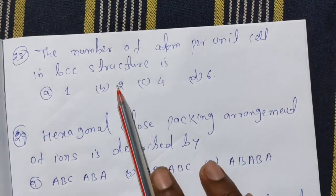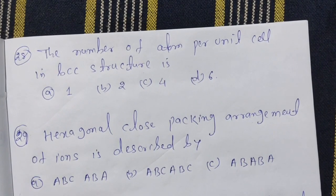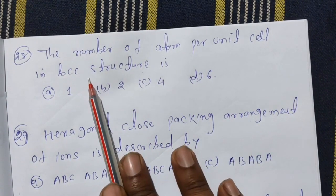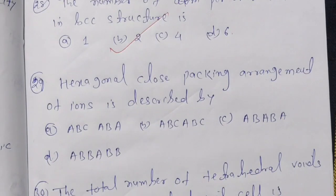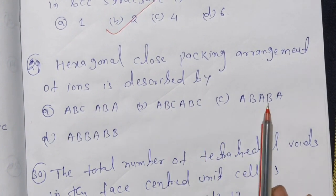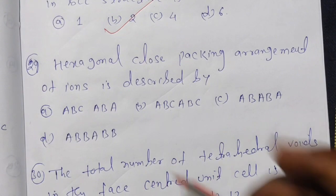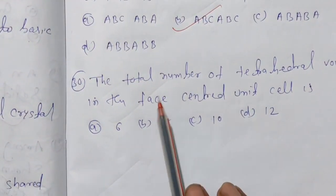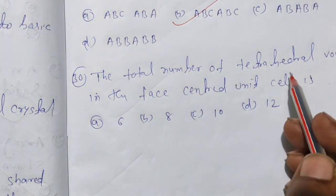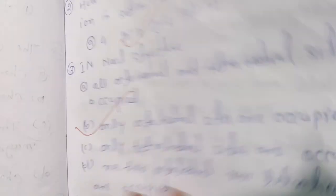The number of atoms per unit cell in BCC structure: BCC has 2 atoms per unit cell. The hexagonal close packing arrangement of atoms is described by an ABAB type repeated arrangement. The total number of tetrahedral voids in the face-centred unit cell (FCC) is 8.